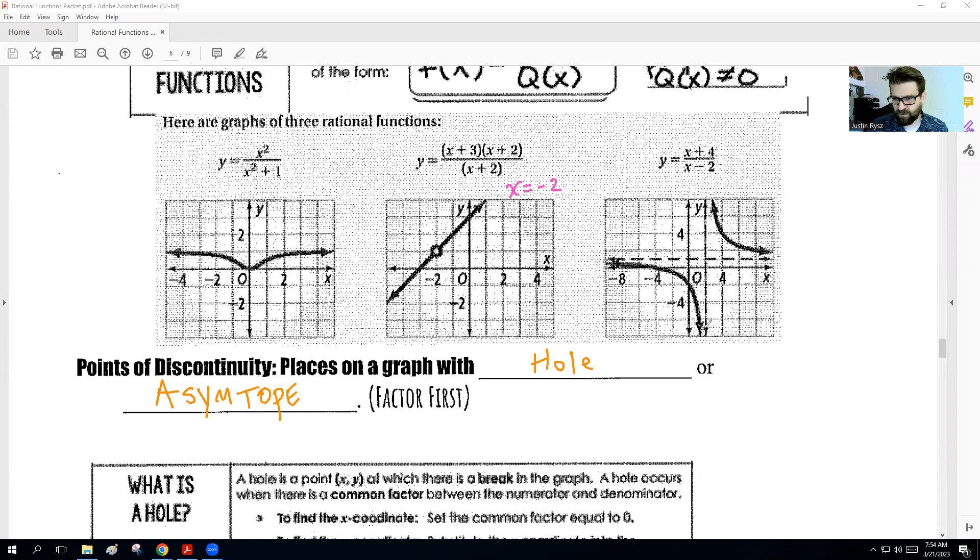Over here, we have our hole. Keep in mind everything's by 2 here is when x equals 2. If we look, a clear dead giveaway of any discontinuous point is what would make the denominator equal to 0.